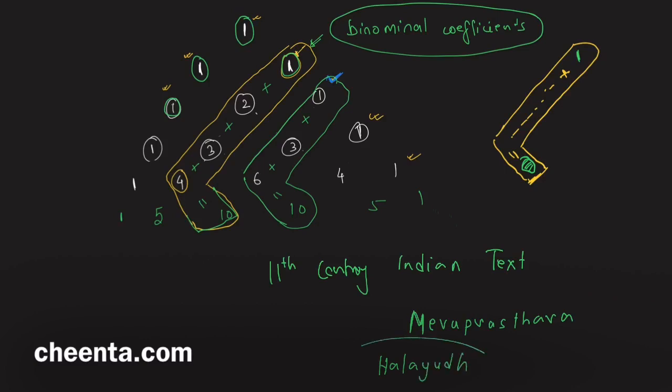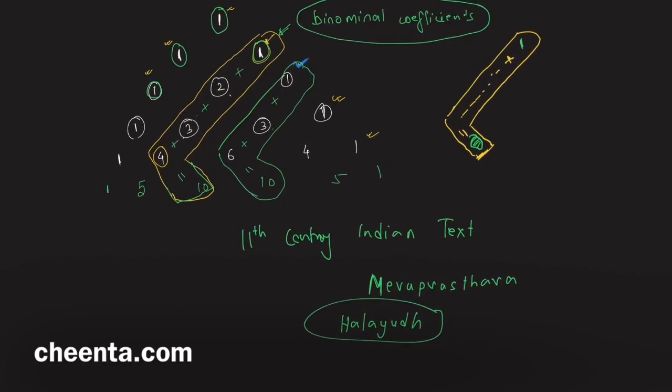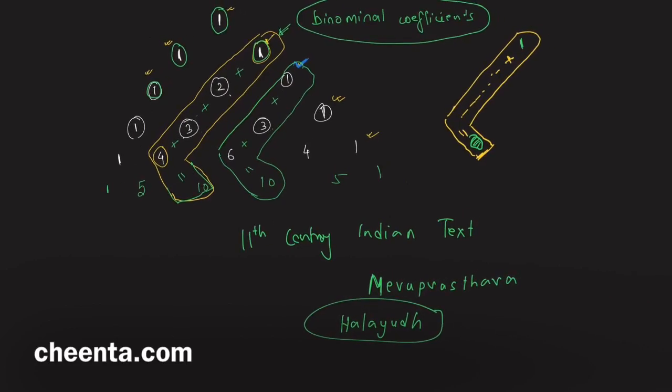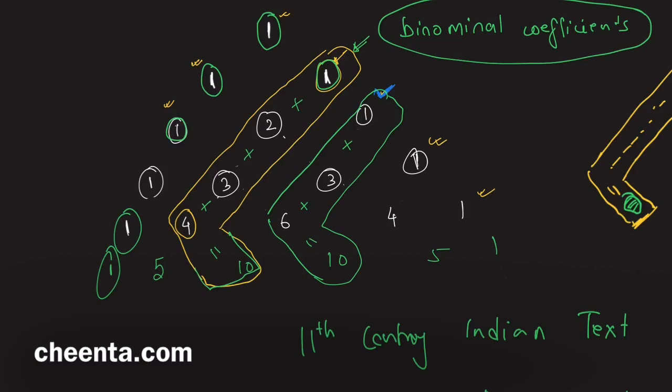It was created by an Indian mathematician called Halayudh. He was studying lyrics and meters in poetry, and this rhythmic sequence of numbers was extremely important in terms of meters of poetry. You should look it up - it's also widely written about.